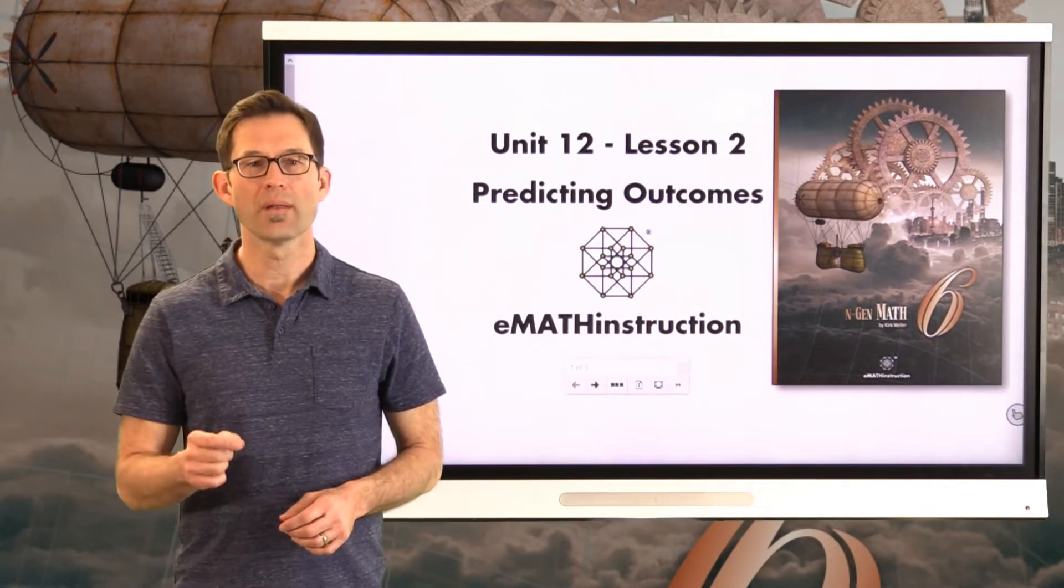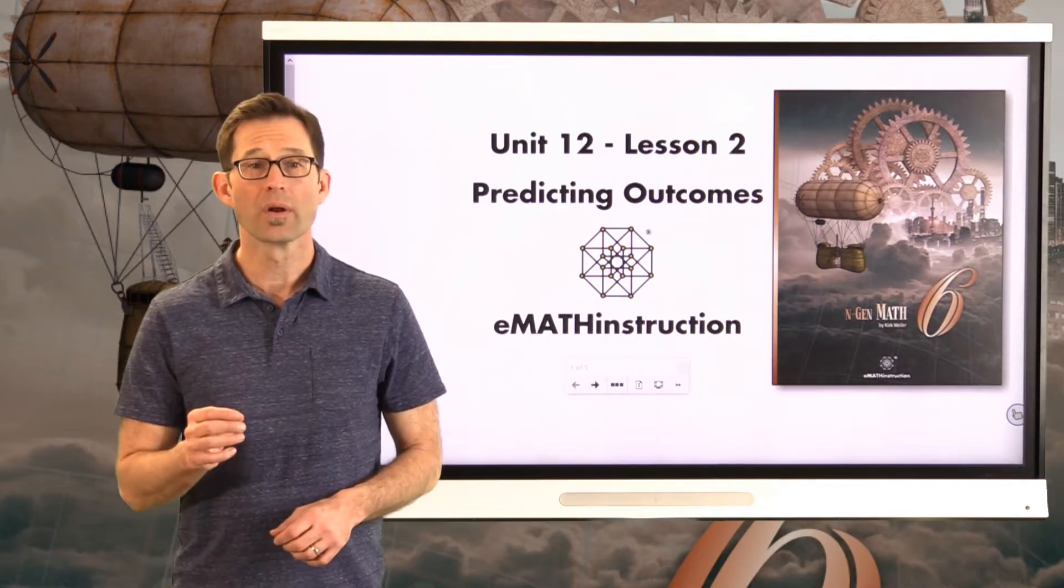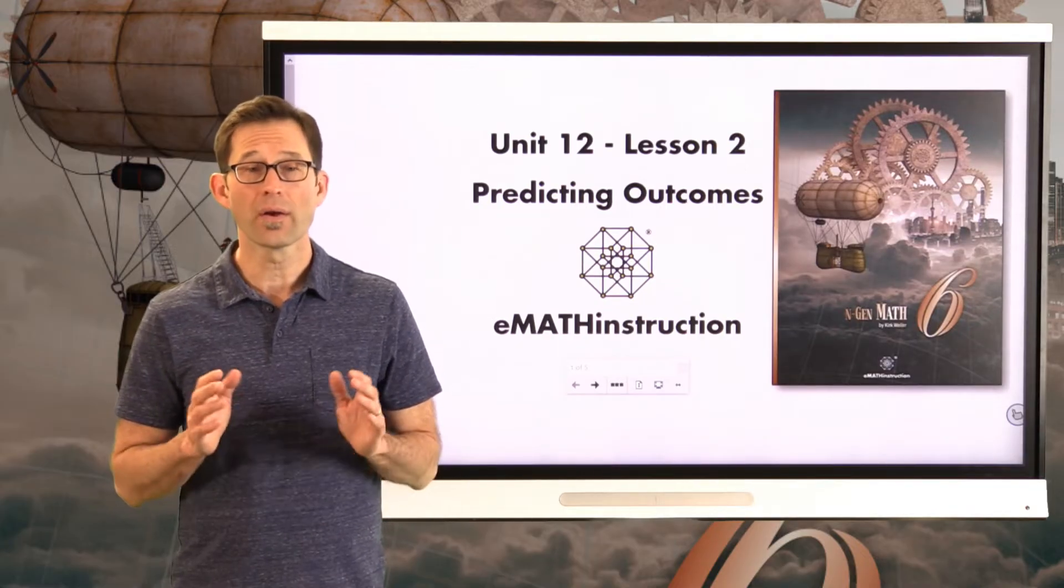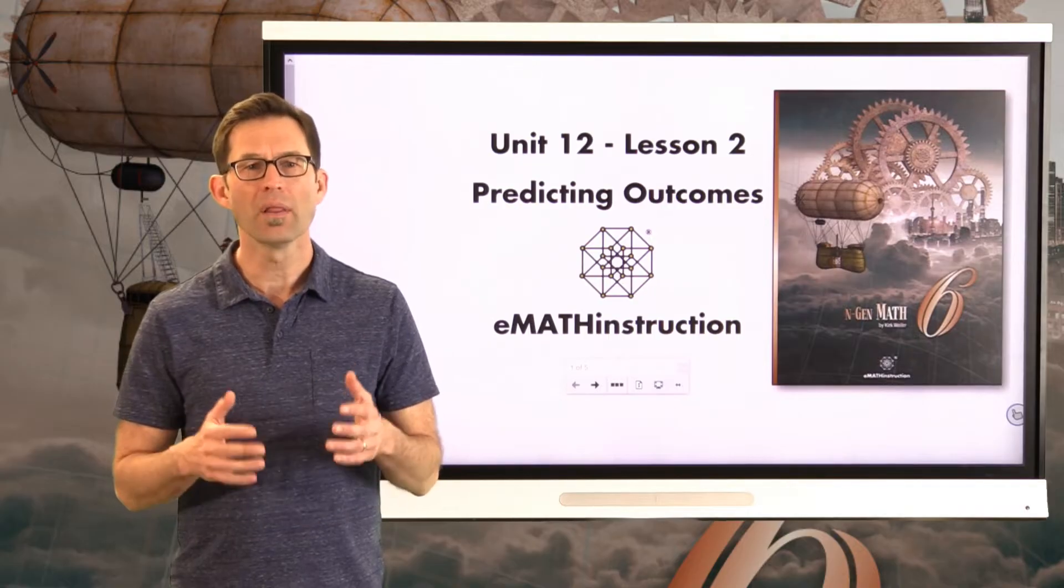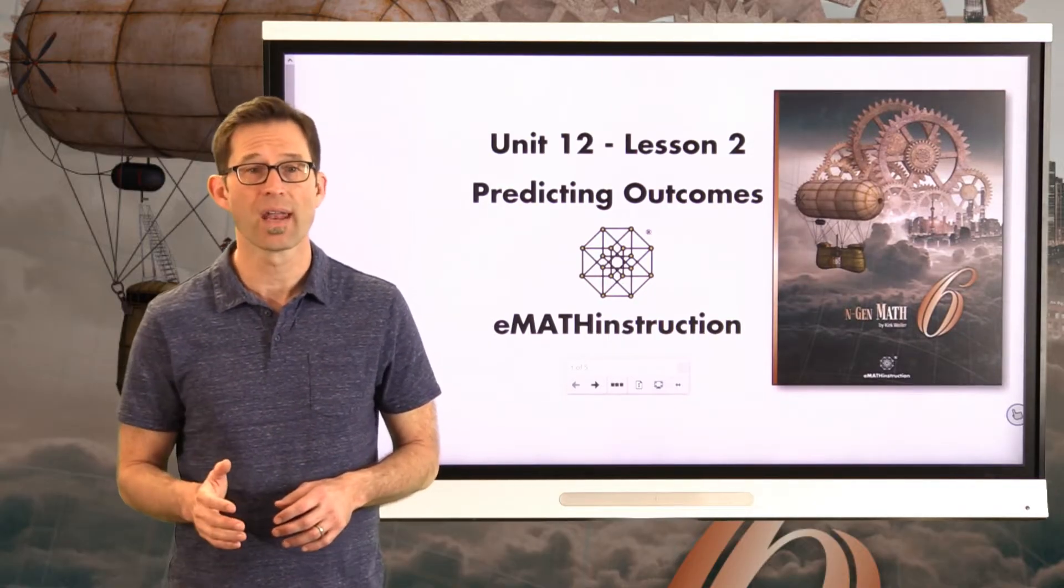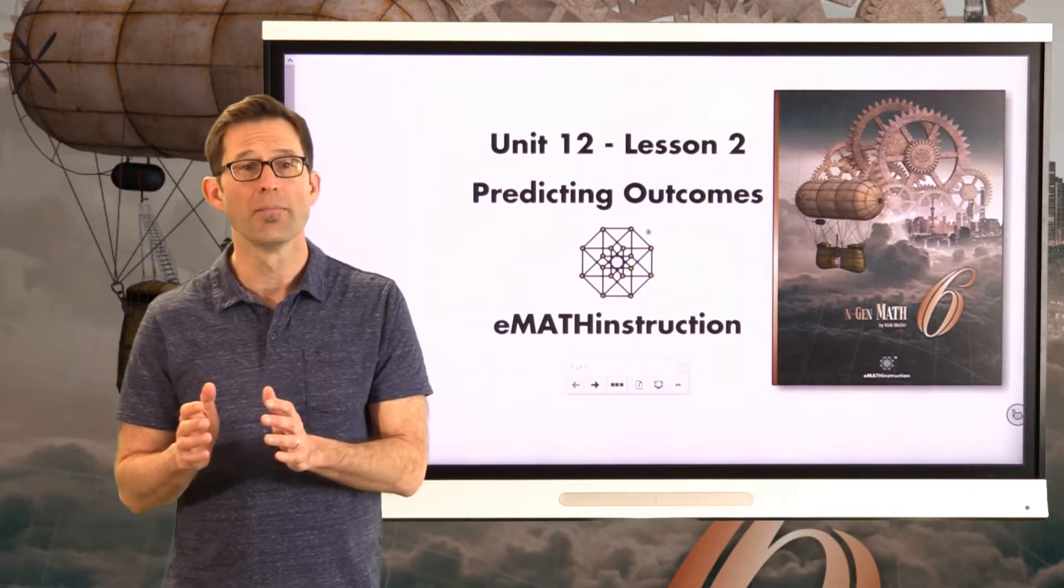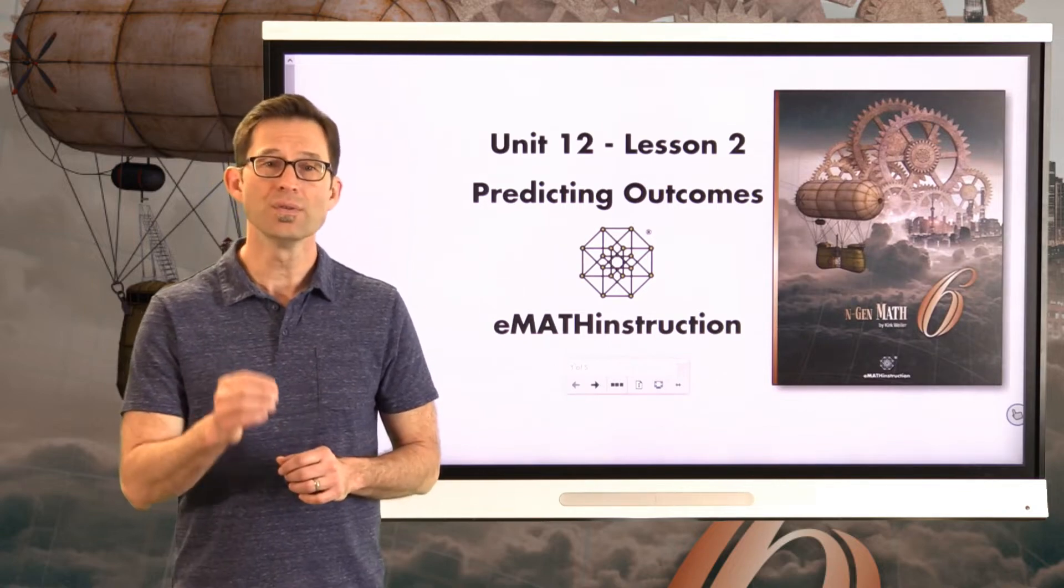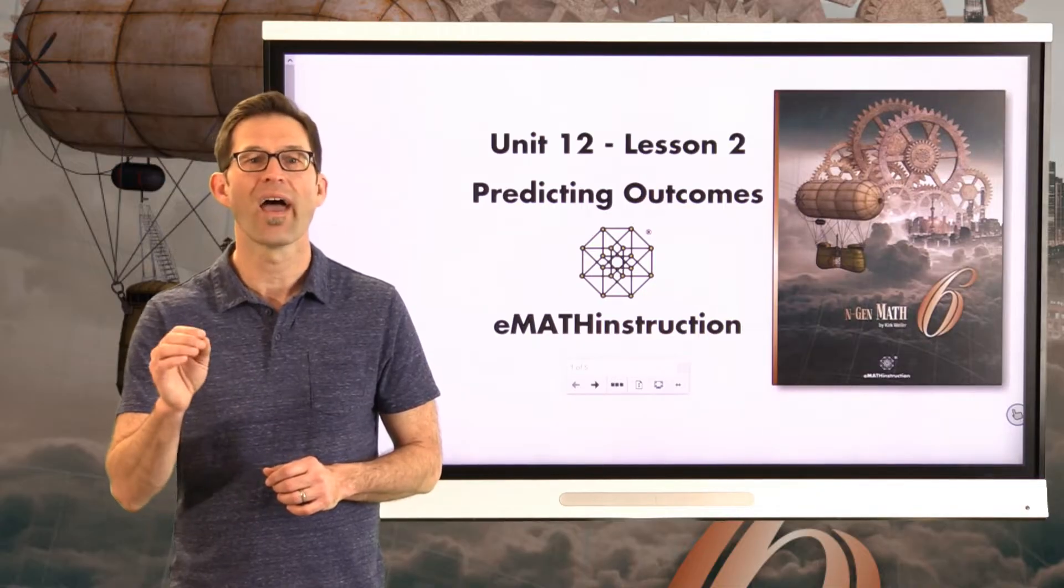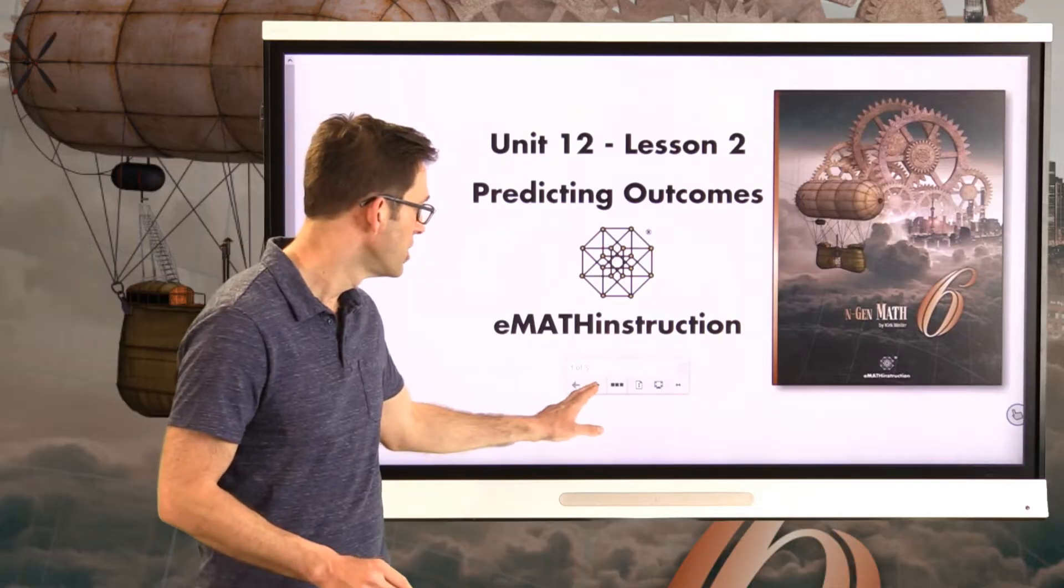Hello and welcome to another NGen Math 6 lesson by EMAP Instruction. My name is Kirk Weiler and today we're going to be doing Unit 12, Lesson 2 on Predicting Outcomes. This entire unit is about probability, our ability to measure the likelihood or chance that something is going to happen. So let's jump into that right away.